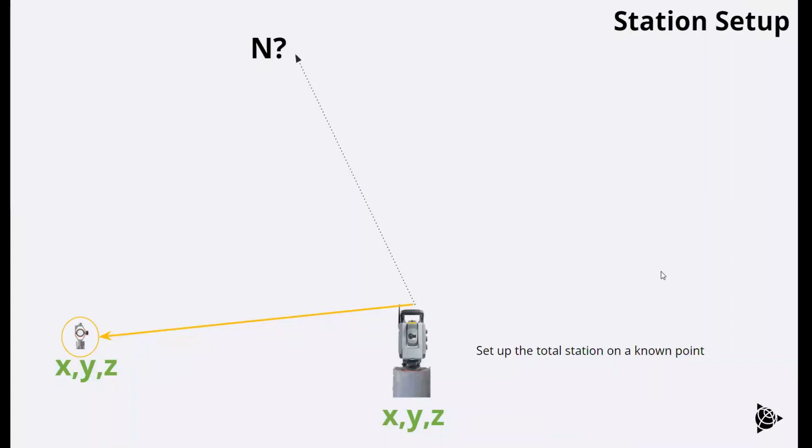The most basic setup that we're looking at here has a total station at some known point with a back site or this prism over here highlighted in yellow. And that's going to be what's called the station setup. So it's a single back site with a known total station location.